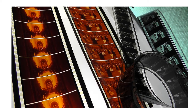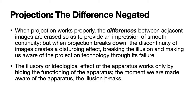In the earlier celluloid film that we used to have before digital filmmaking, in these film reels we can see that each of the images are almost exactly the same, but there are small differences. When we project them together, the images flow into one another. You see one image and before that image is completely removed from your vision, the next image is projected. It goes so fast at a very specific speed, and that is what makes it look as if the images are moving. When projection works properly, the differences between adjacent images are erased so as to provide an impression of smooth continuity.